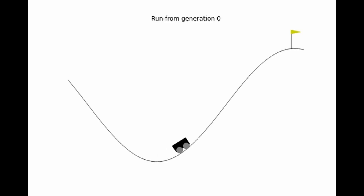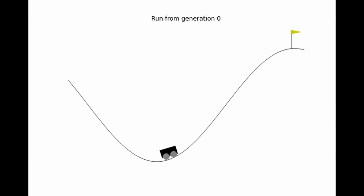The mountain car problem is an excellent problem for bridging that gap between discrete and continuous. The state space in this case is continuous, while the action space is still discrete — meaning the car can take the values of do nothing, accelerate, or decelerate. You see the car rocking back and forth, and the car's goal is to build enough momentum by rocking back and forth to reach the flag at the top. We can show that this works with deep Q-learning, where a neural network takes in the state it's currently at and decides whether to accelerate, decelerate, or do nothing.